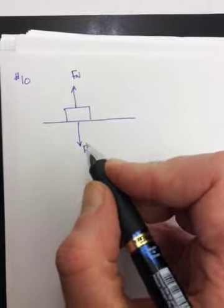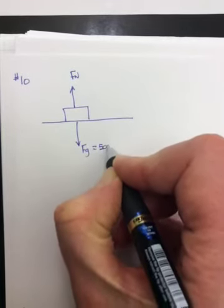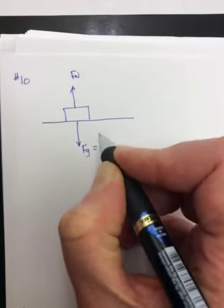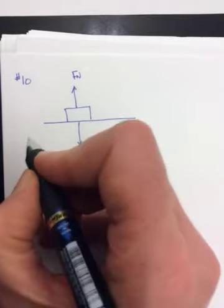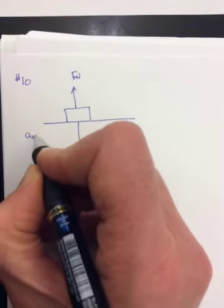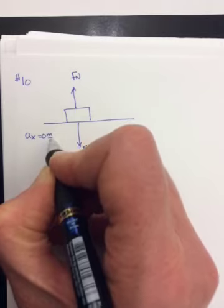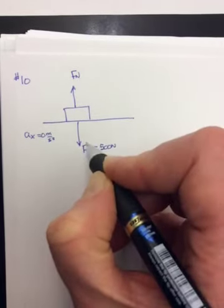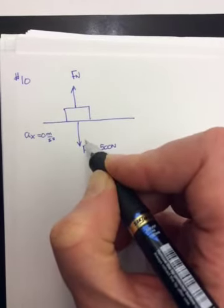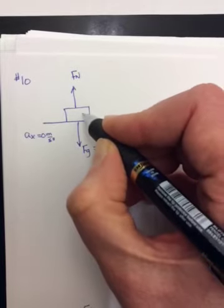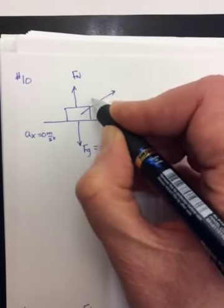A box weighing 500 newtons, so that's your Fg, is being pulled along a level floor at a constant speed. Constant speed means Ax is zero. By a force of 50 newtons that acts upward at an angle of 30 degrees with the floor.